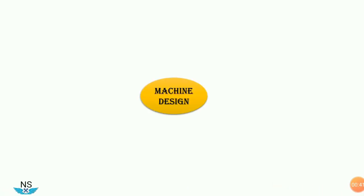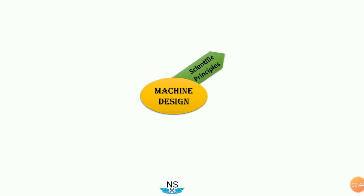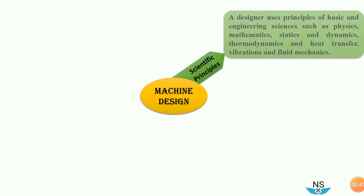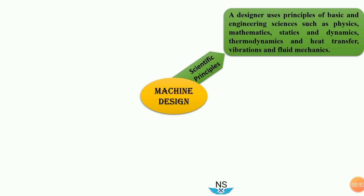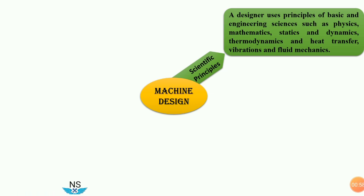This definition of machine design consists of five components. The first component is scientific principles. A designer uses principles of basic and engineering sciences such as physics, mathematics, statics and dynamics, thermodynamics and heat transfer, vibrations, and fluid mechanics.